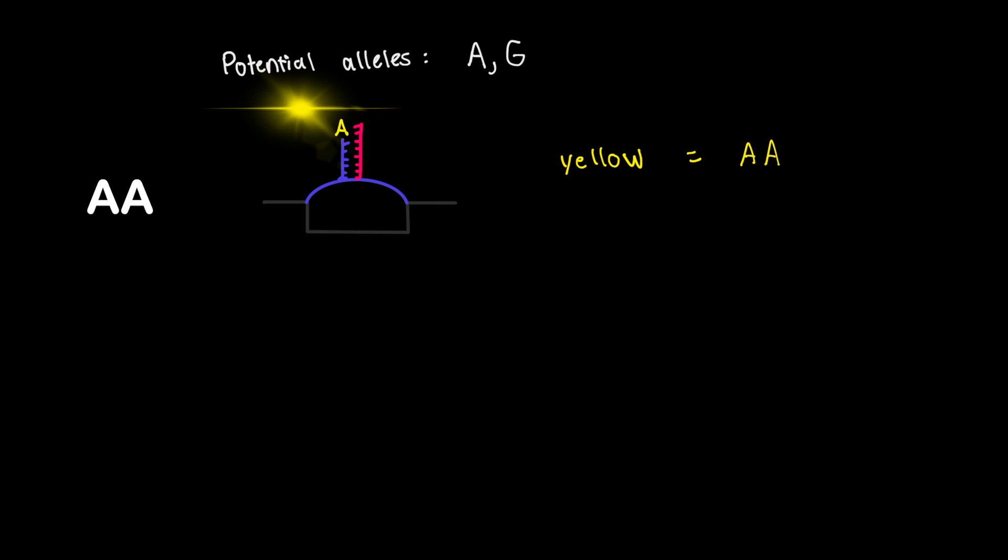The second possibility is that the sample is homozygous for G. In that case, once the sample's complement DNA leading up to the SNP location is bound, a G is added. After being excited by the laser, a blue signal is produced, which again is amplified by the same reaction happening hundreds of times across the surface of this bead.